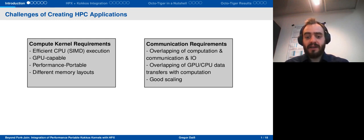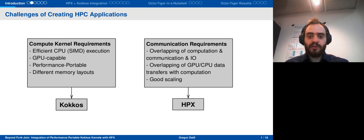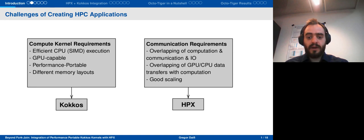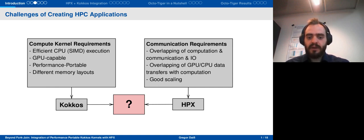As everybody is having the same issues, naturally there's a solution to every problem. For performance portability and targeting different accelerators, we can use the COCOS framework. And for the communication and overlapping issues, we can use HPX, which is a distributed task-based runtime system. While there is a solution to every issue, using them together is a different question. For example, how can we launch a COCOS kernel and have it integrated into the task graph of HPX without it being synchronous? That's exactly the kind of question I want to answer in this talk.